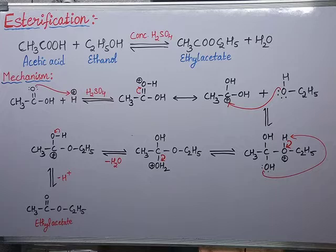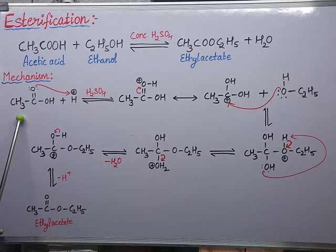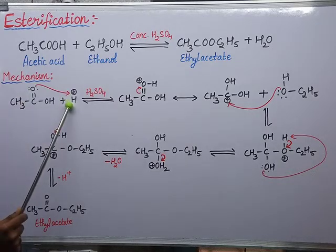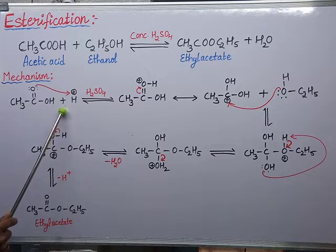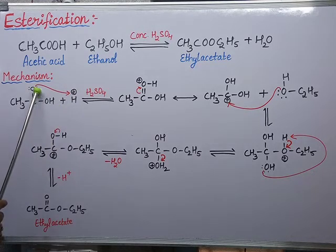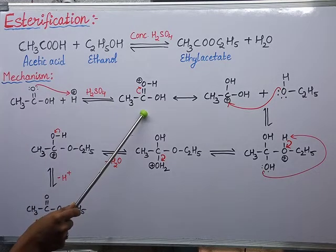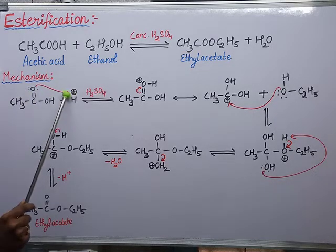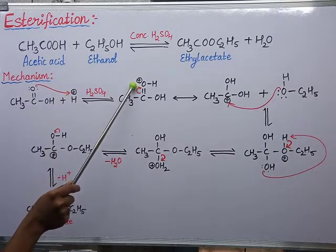Let us see the mechanism. Firstly, I'm taking the acetic acid. In acetic acid, there is a lone pair of electrons on the oxygen. This oxygen attracts a proton from sulfuric acid — you know, an acid always gives protons. So this lone pair attracts the proton, forming the protonated species. There is a bond formation between oxygen and the proton, and as oxygen is donating its electrons, it gets a positive charge.